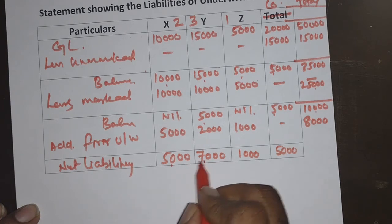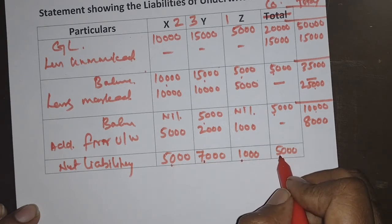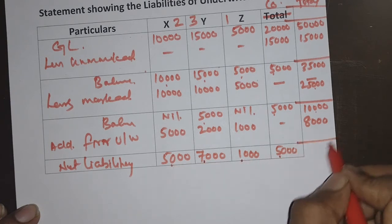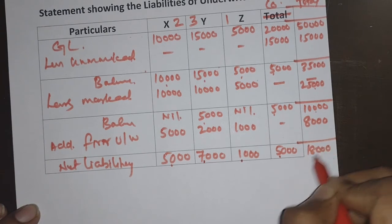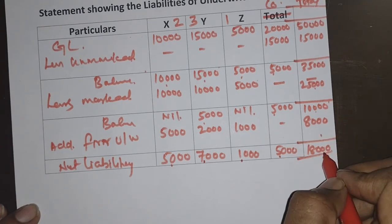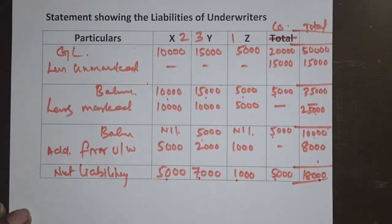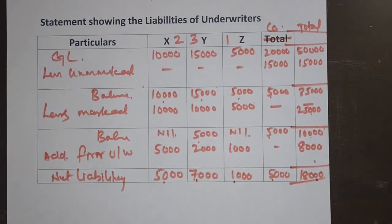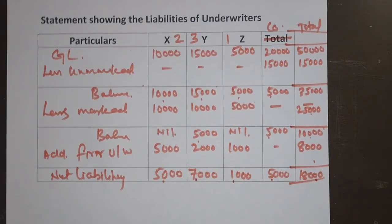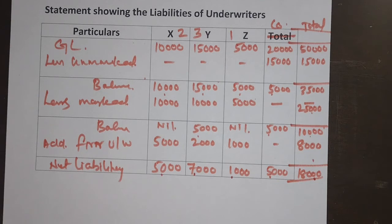Total net liability: 5,000 plus 7,000 plus 1,000 plus 5,000 = 18,000, and both sides match at 18,000. That's it for this problem. Thank you for watching. For any clarifications, please comment. New viewers can subscribe to the channel and hit the bell icon.